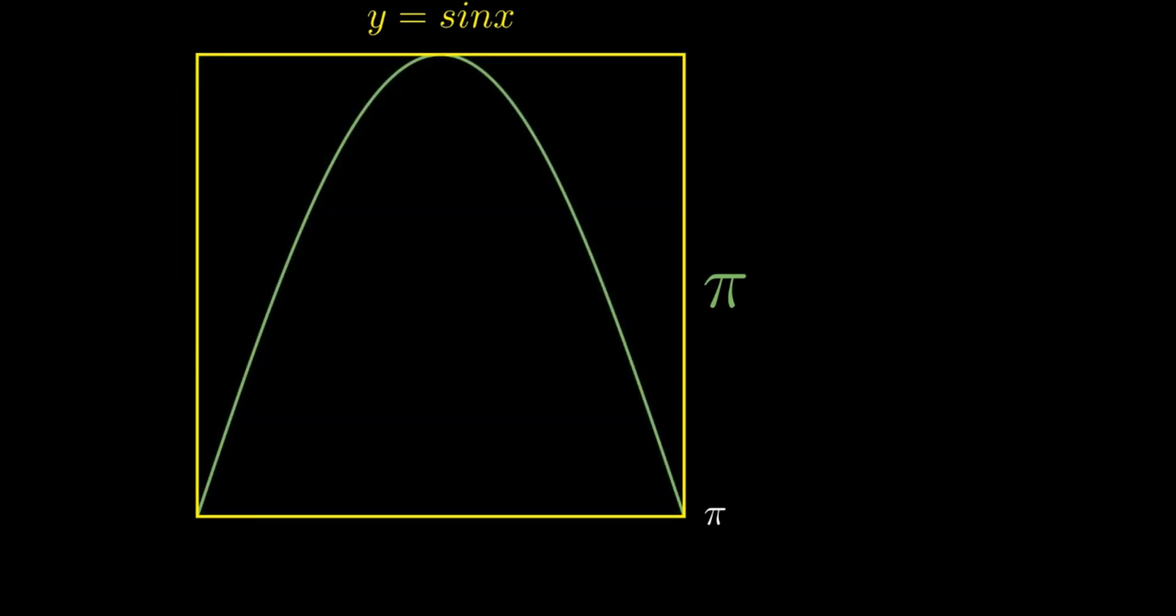If I throw random dots inside that rectangle, some of those dots will surely fall inside the sin curve. Then if I calculate the probability of one random dot falling inside the sin curve as I throw dots in the rectangle, the fraction would approximately represent the ratio of area of sin curve to the area of rectangle.